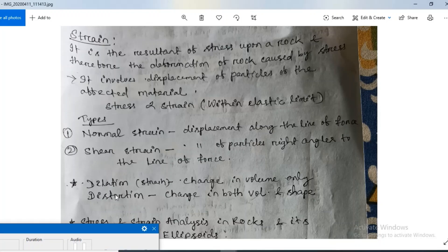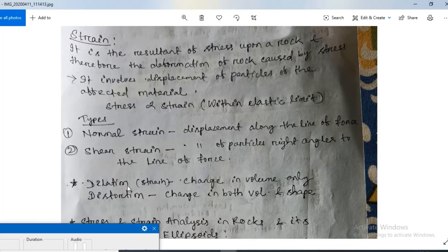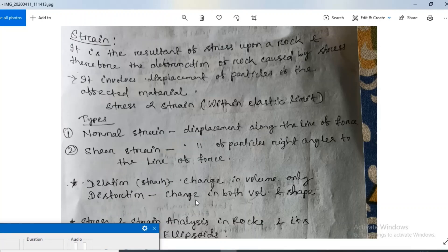There are two special types of strain: dilation and distortion. These two terms are very important for entrance point of view. Dilation means deformation occurs only in volume or changes occur only in volume. But in distortion, change occurs in both volume and shape.